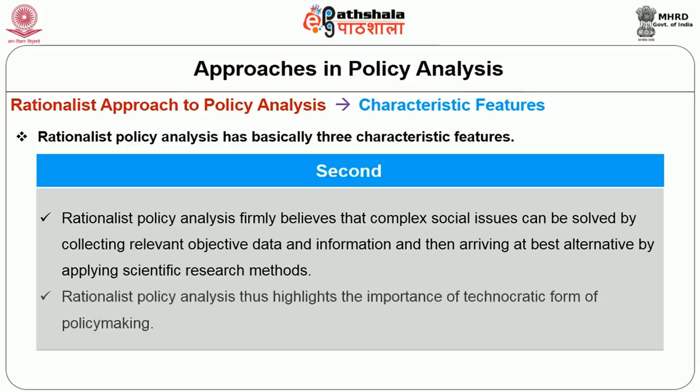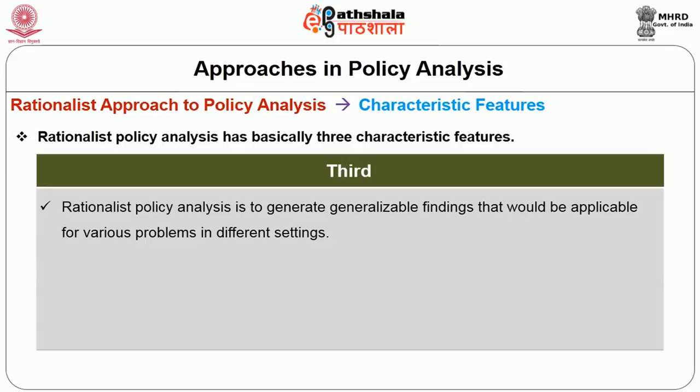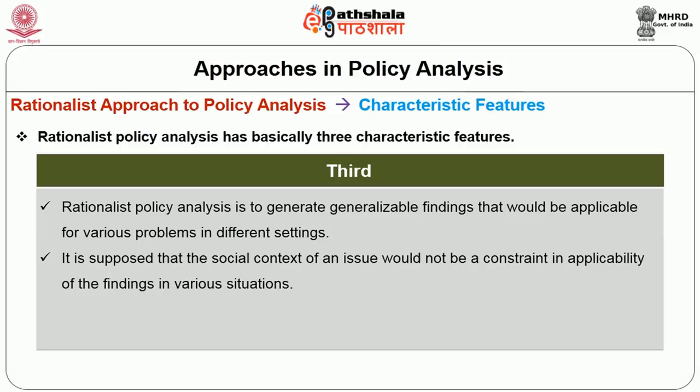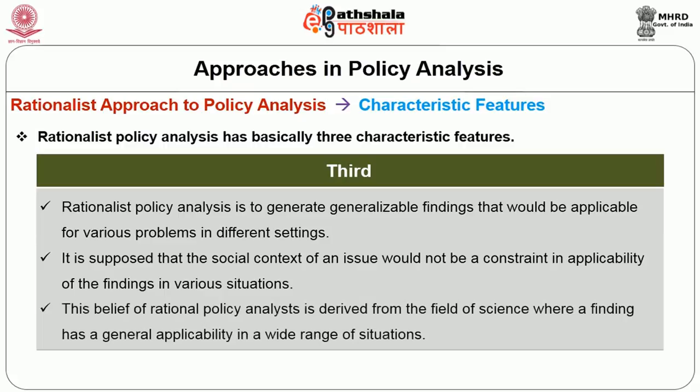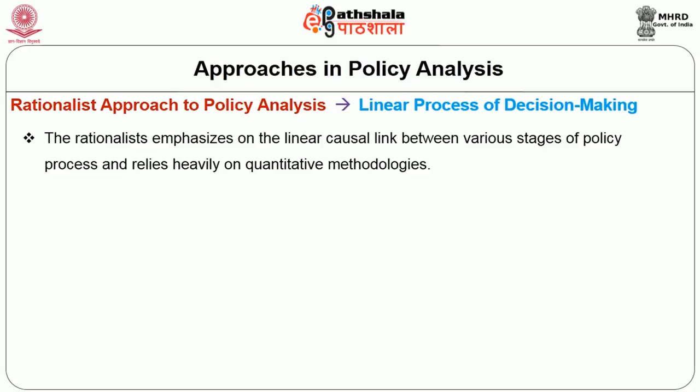Rationalist policy analysis firmly believes that complex social issues can be solved by collecting relevant objective data and information and then arriving at the best alternative by applying scientific research methods. Rationalist policy analysis thus highlights the importance of technocratic form of policy making. The third characteristic of rationalist policy analysis is to generate generalizable findings that would be applicable for various problems in different settings. It is supposed that the social context of an issue would not be a constraint in the applicability of the findings in various situations. This belief is derived from the field of science where a finding has a general applicability in a wide range of situations. The rationalist emphasizes on the linear causal link between various stages of policy process and relies heavily on quantitative methodologies.